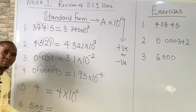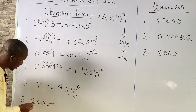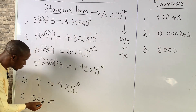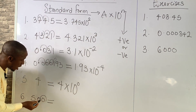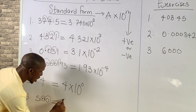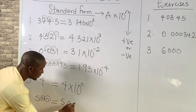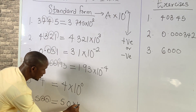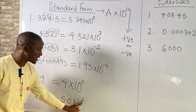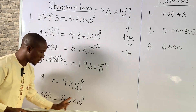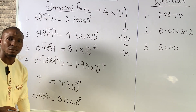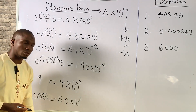Let's look at the last example: 500 in standard form. We count 2 places to the left, giving 5.0 times 10 raised to power 2 — positive, because we are moving towards the left-hand side.